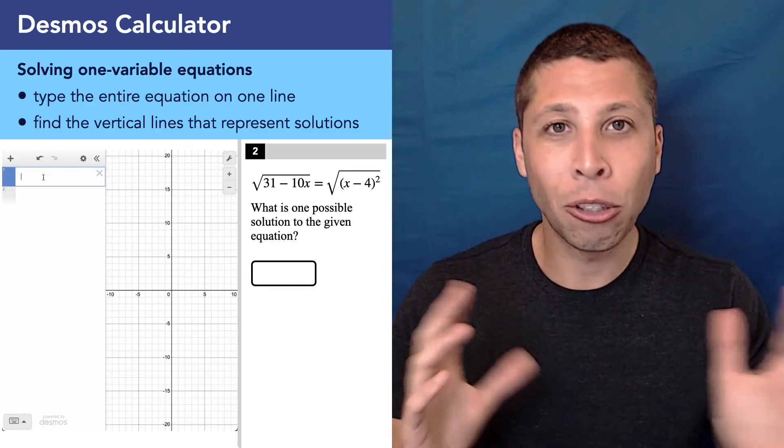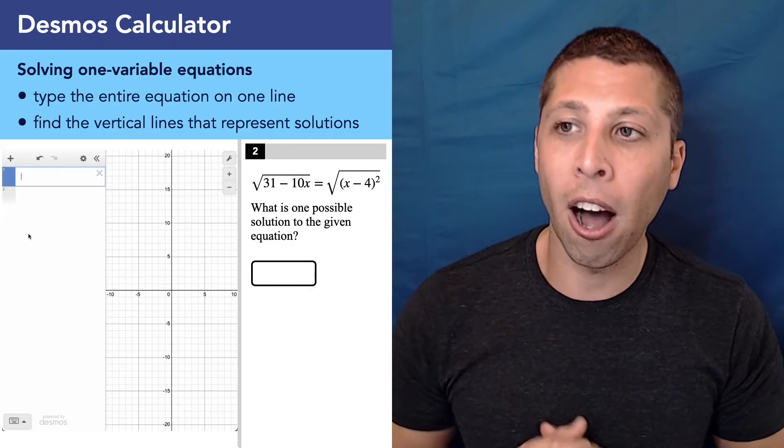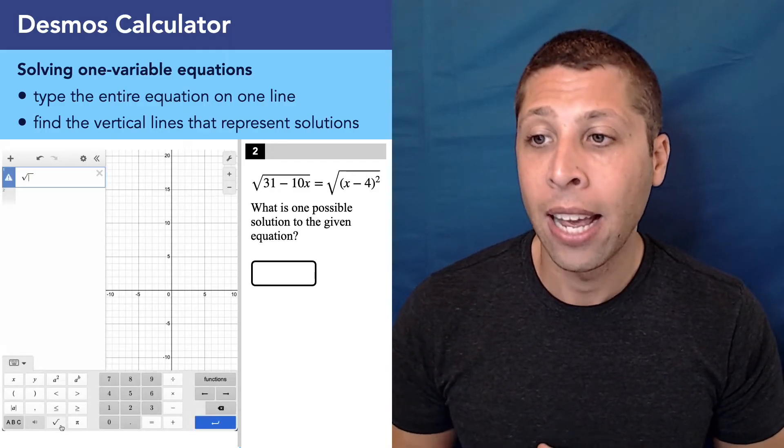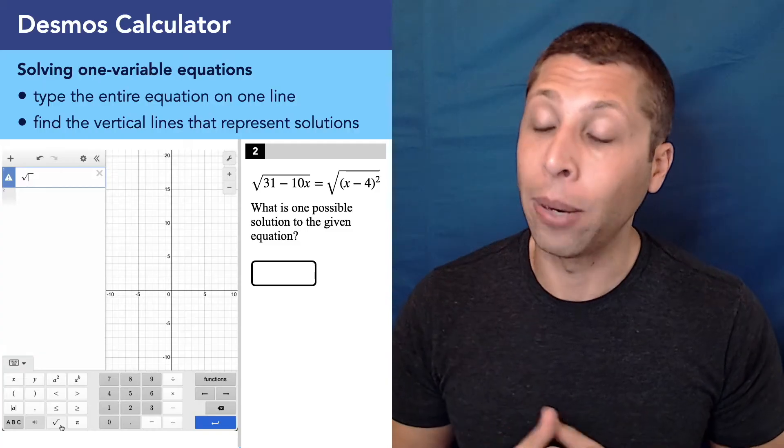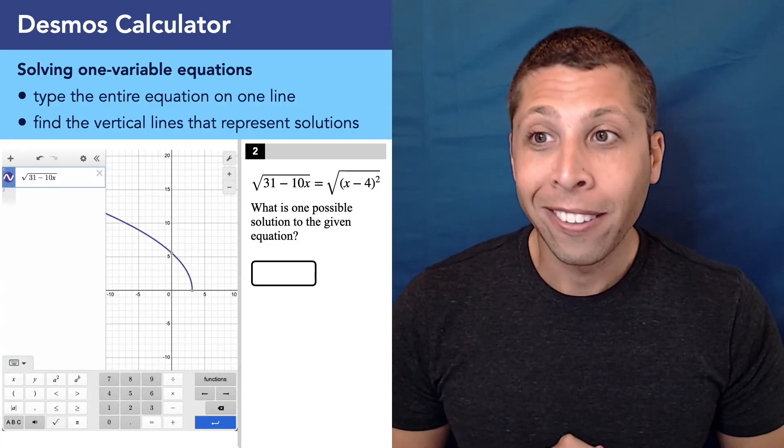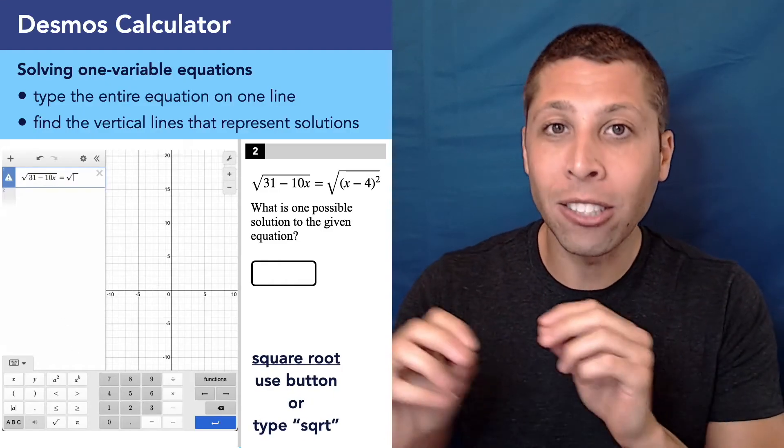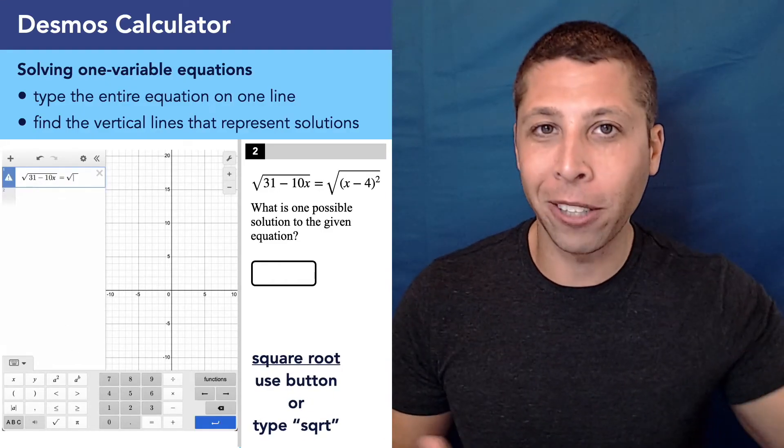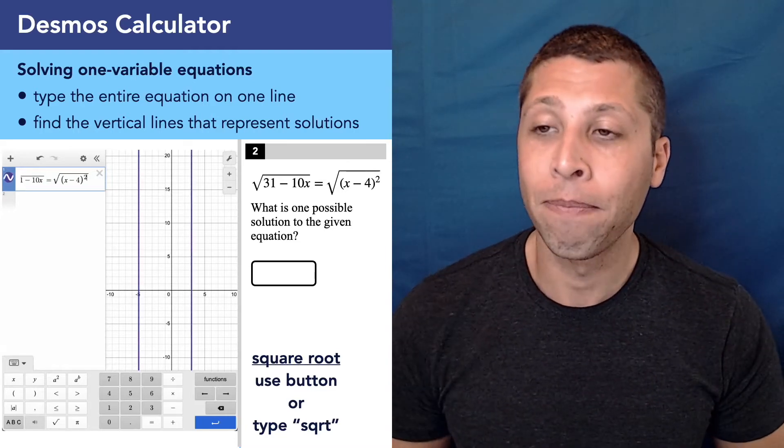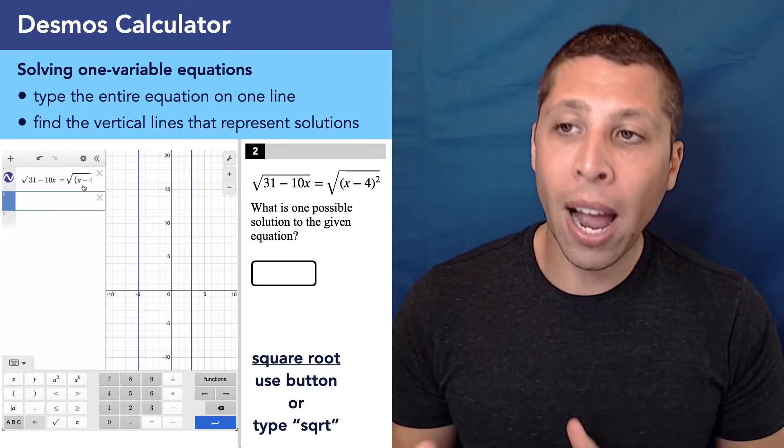And what we should do then is enter it as written into the calculator. So if you're having trouble with square roots, you can hit the button on the bottom, that little keyboard button, and it'll bring up all the functions. So you can hit that and then you can type the rest. Or you can also type the letters SQRT and it'll auto generate the square root symbol for you. So this is why you should practice at home, get used to that stuff.